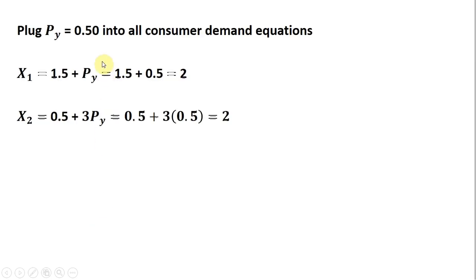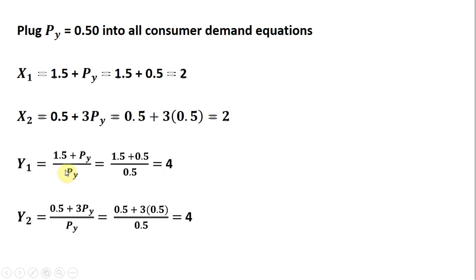We take the price of good y of 0.5 and plug it into all the consumer demand equations. For consumer 1, plugging in Py = 0.5, consumer 1 will consume 2 units of x. For consumer 2, plugging 0.5 into their demand for good x, consumer 2 will also consume 2 units of good x. Finally, evaluating the individual demands for good y at Py = 0.5, we get our equilibrium quantities.